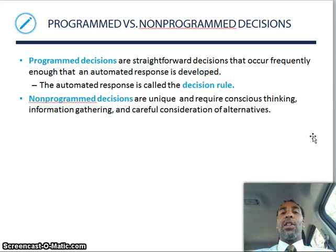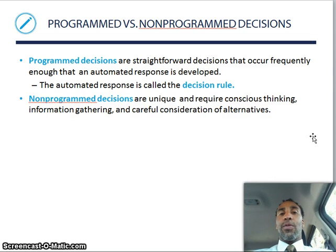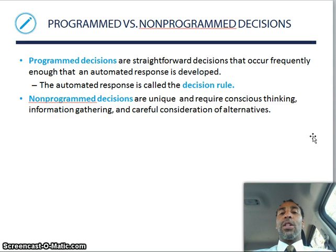Programmed versus non-programmed decisions. Programmed decisions are straightforward decisions that occur frequently enough that an automated response is developed — if the light is red, I stop. That's a programmed decision; this automated response is called the decision rule. Non-programmed decisions are unique and require conscious thinking, information gathering, and careful consideration of alternatives. If it's a non-programmed decision, you're going to have to make some type of decision that's not normal, not part of the status quo.